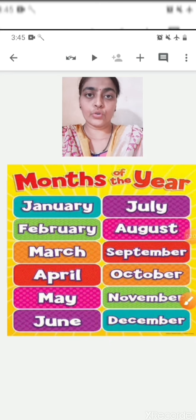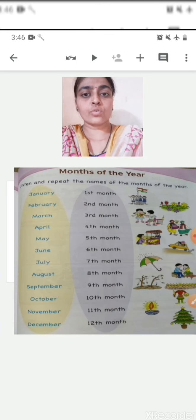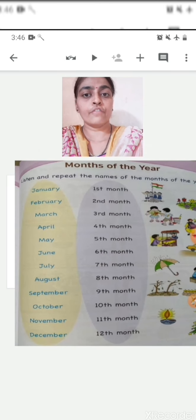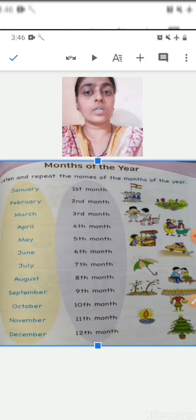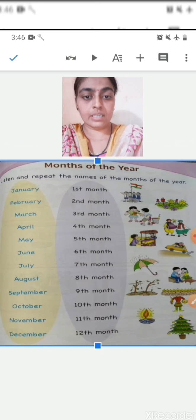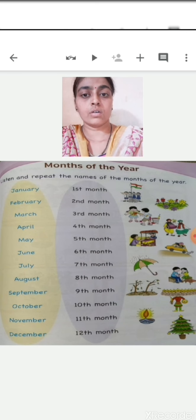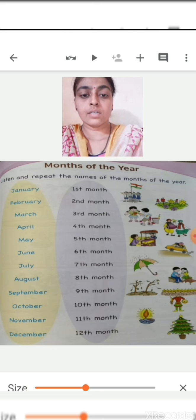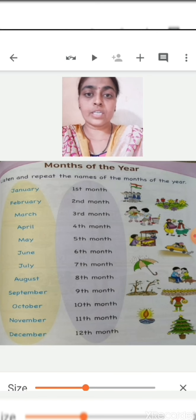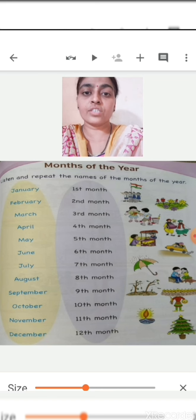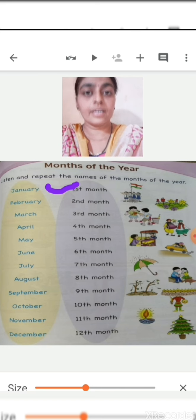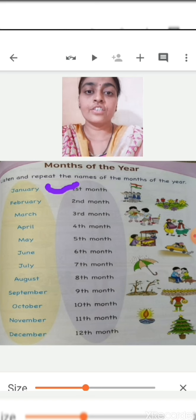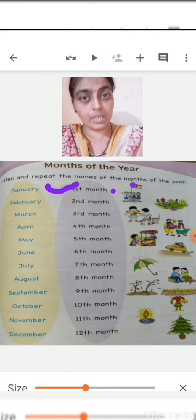I am going to show you which month comes first, second, third and so on. This is the page of your Maths workbook from which we are going to see the position of the months. Which month comes first? January. January is the first month of the year. Say everyone — January is the first month of the year.